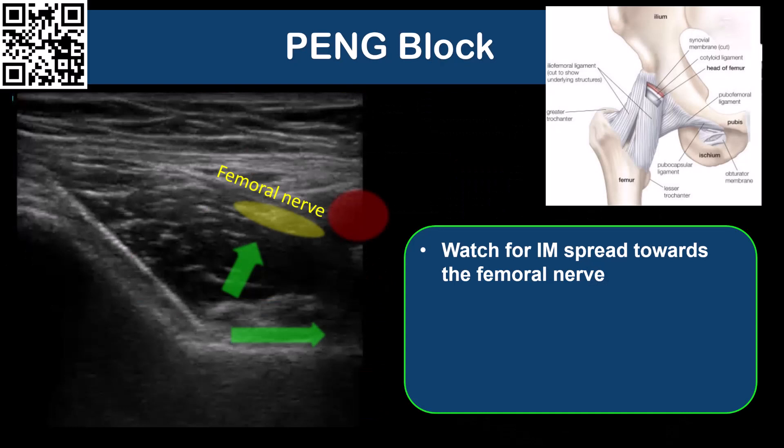This intramuscular spread is something to be aware of, as local anesthetic can also spread more superficially towards the femoral nerve. This is particularly likely if you withdraw the needle tip off the bone when injecting, and this often happens because the injection pressures are really high when trying to inject under the iliofemoral ligament. It does help to have an assistant with strong hands, but one must avoid the temptation to withdraw the needle too much.